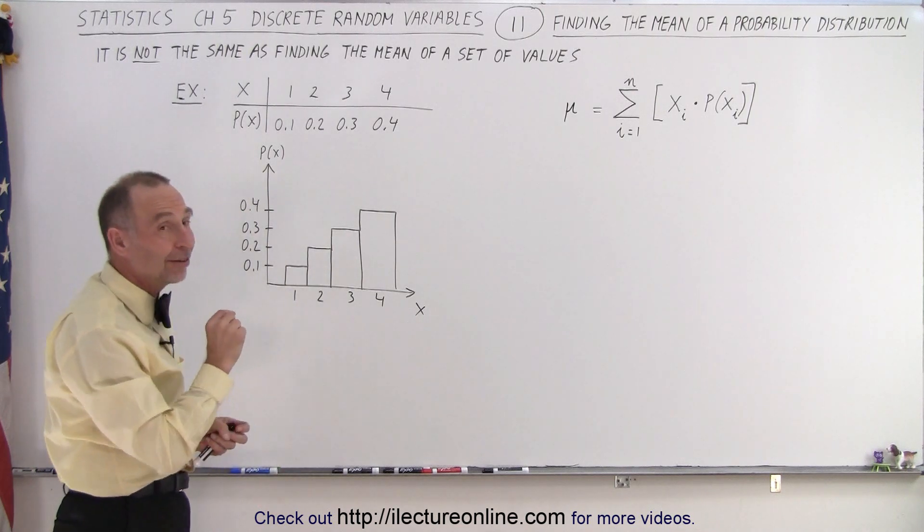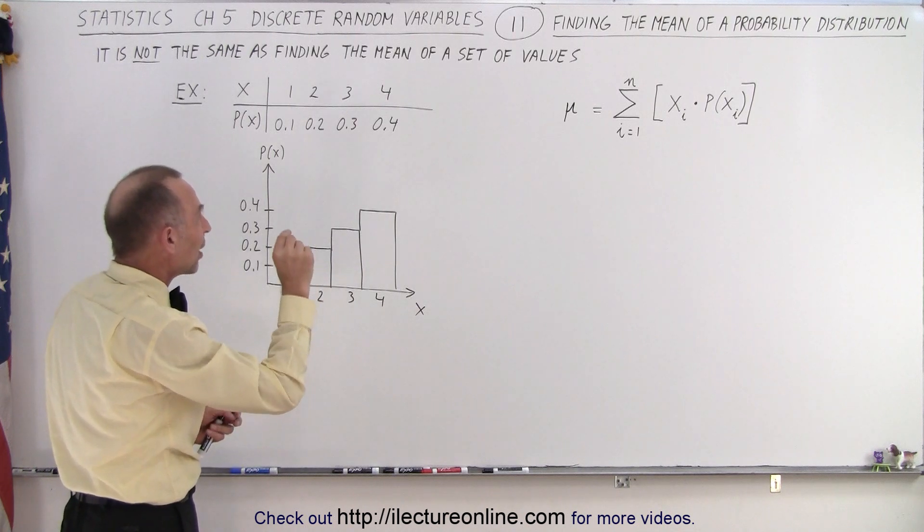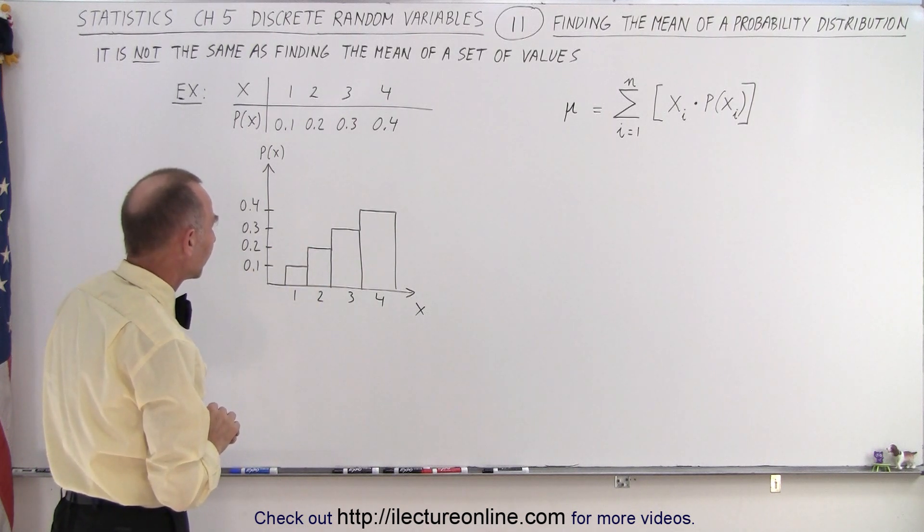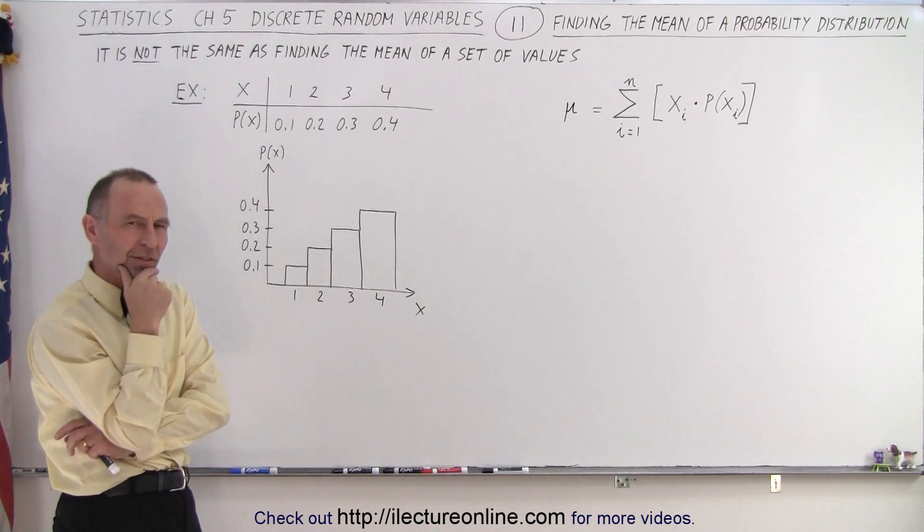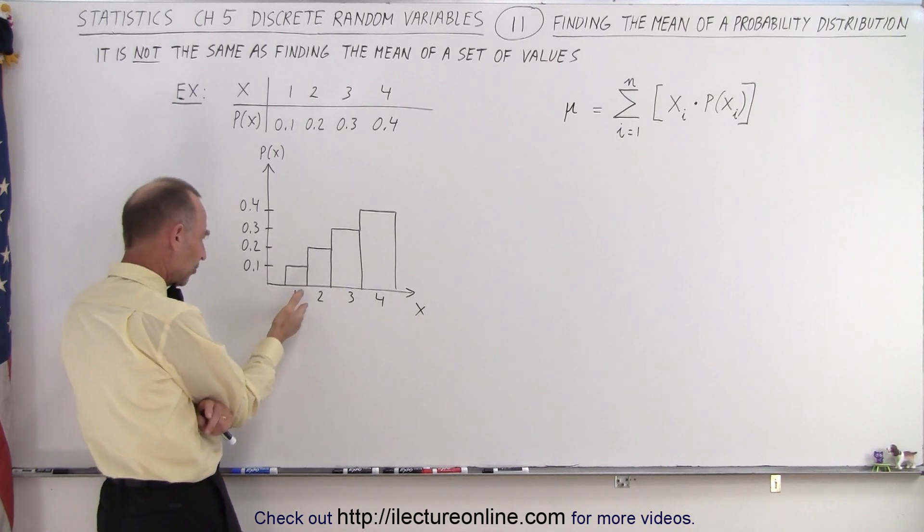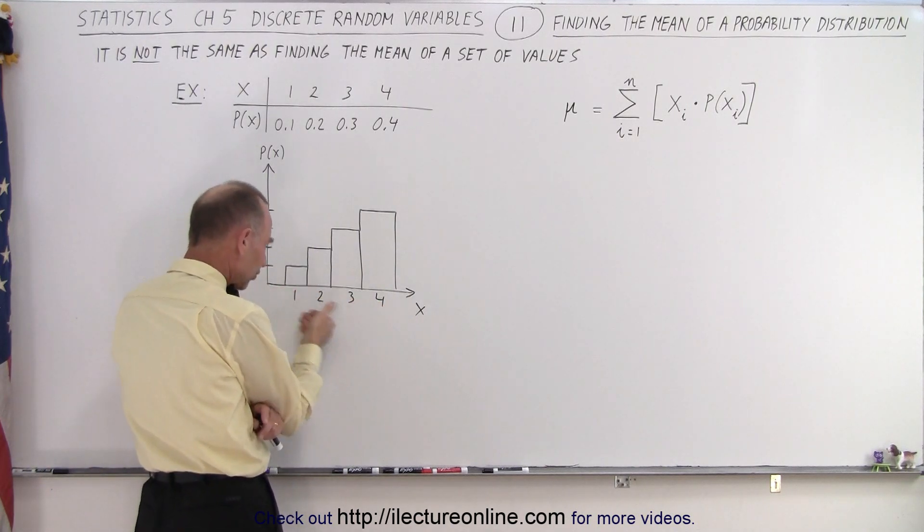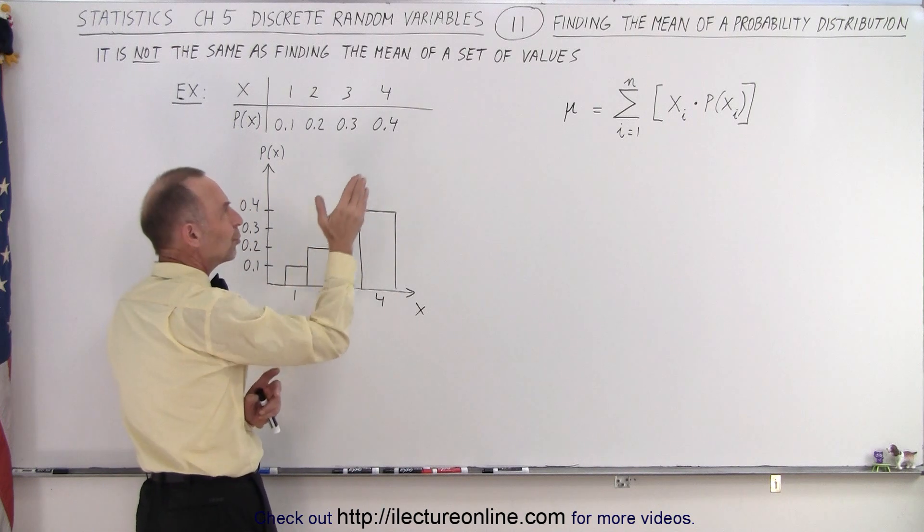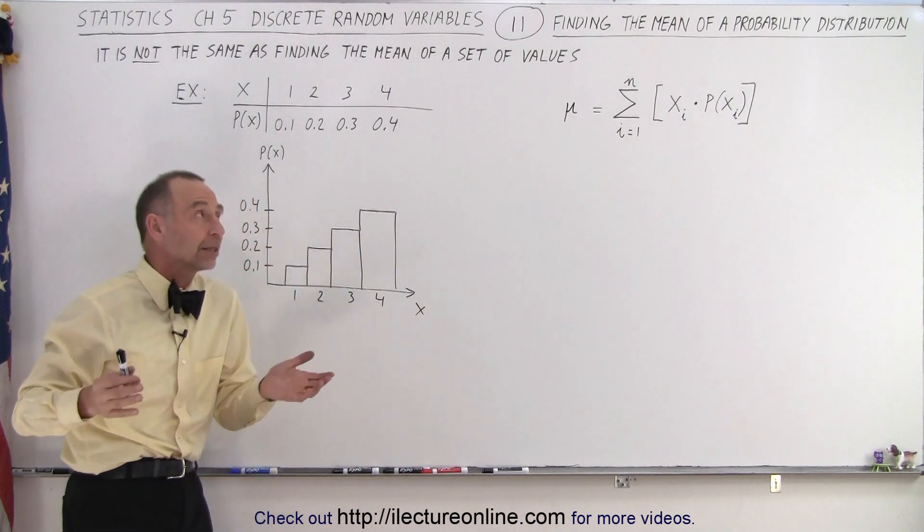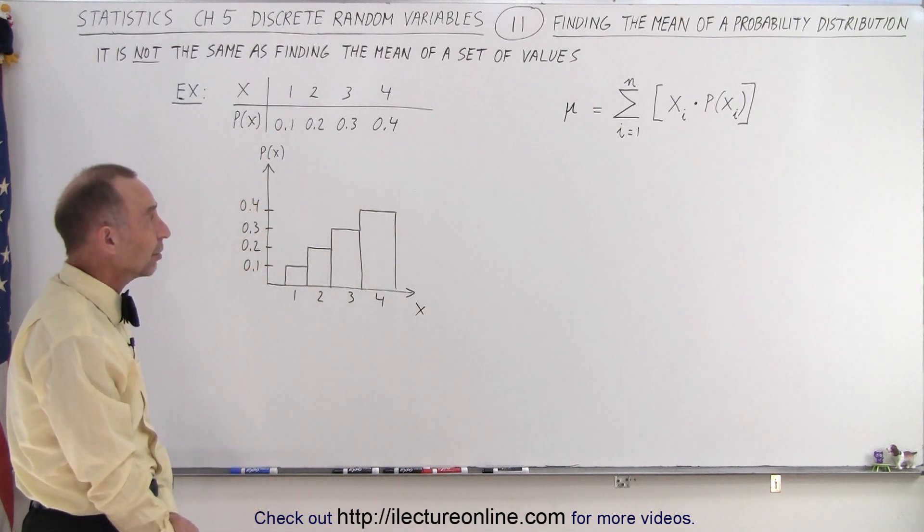Well that's not the result we're going to get when we take the mean of the probability distribution. That seems odd, doesn't it? Notice here the possible values for x and the average of those values is 2.5. Why shouldn't we get 2.5 when we calculate the mean of the probability distribution?